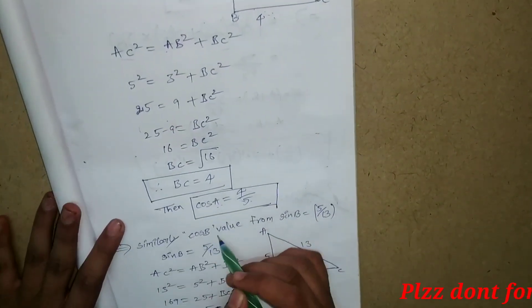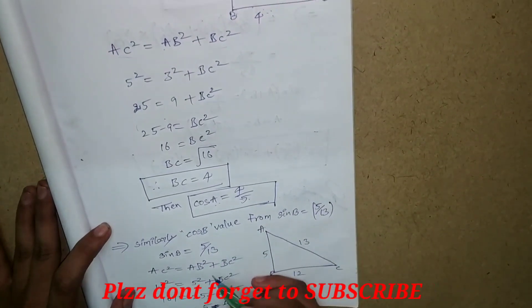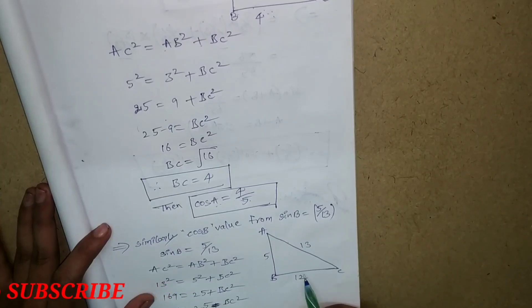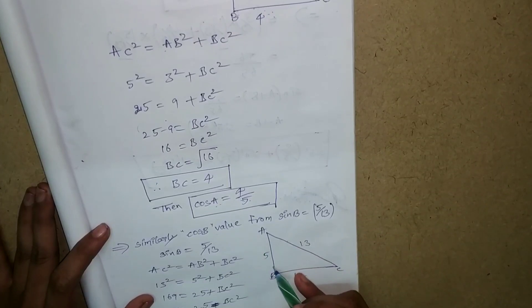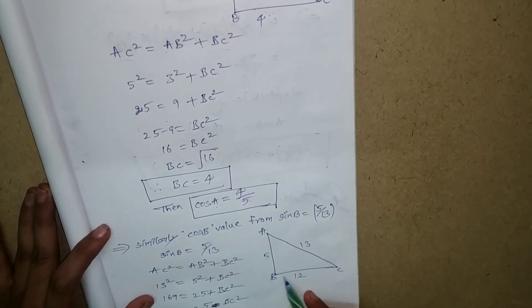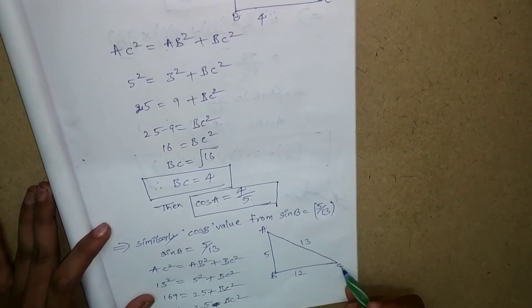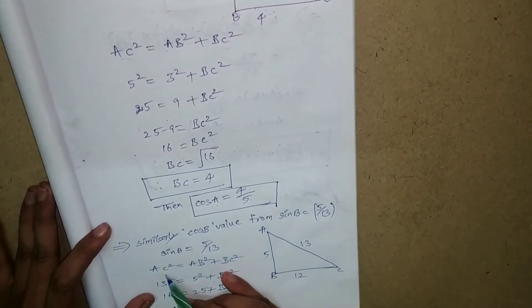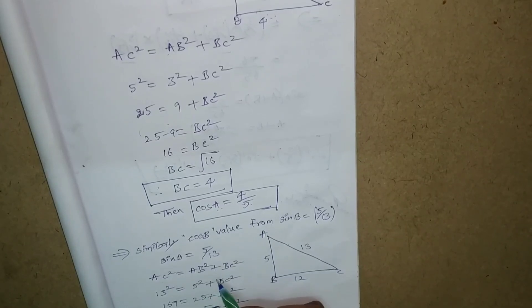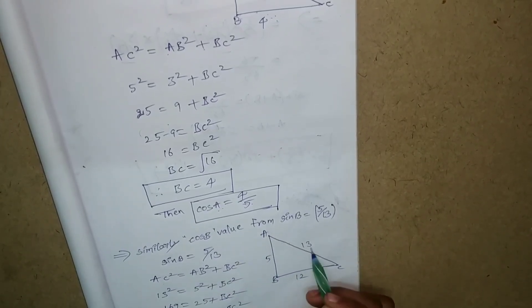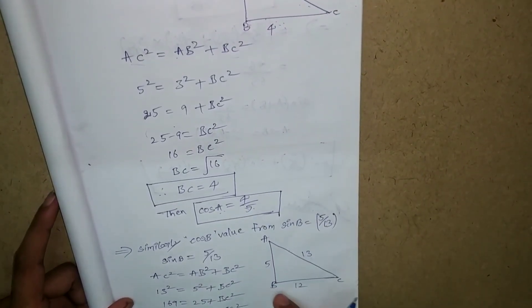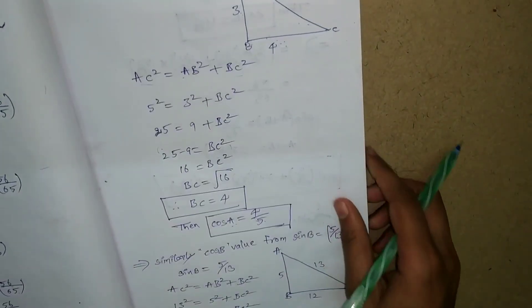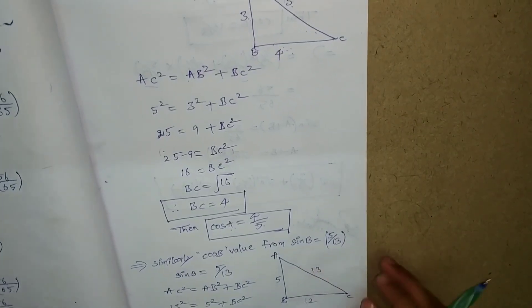Similarly, we find cos b value. Since sin b equals 5 by 13, the opposite side is 5 and the hypotenuse is 13. By using Pythagoras theorem, the adjacent side value equals 12. So cos b equals adjacent by hypotenuse, which is 12 by 13.